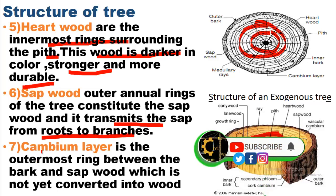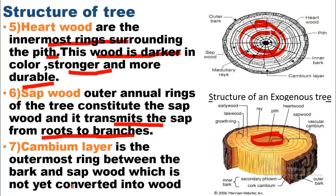The seventh part of the tree structure is the cambium layer. The cambium layer is the outermost ring between the bark and sapwood, which has not yet been converted into wood. As you can see in the diagram, this layer sits between the sapwood and outer bark, and it is not yet strong enough to carry load.